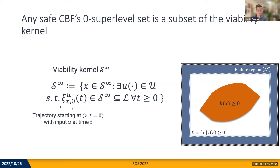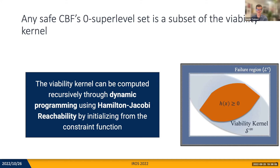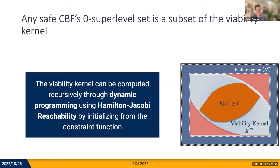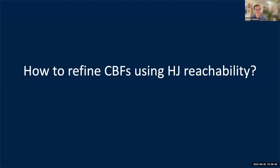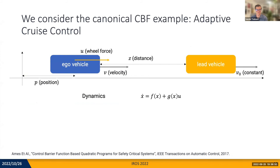Additionally, a safe set by its definition has to be control invariant, which basically implies that you can remain within this set for infinite time. The largest of such sets is called the viability kernel, which is where reachability comes in. The viability kernel can be computed recursively through dynamic programming using HJ reachability by initializing from the constraint function, as you can see here on the right. However, initializing from the constraint function requires waiting until the value function has converged to guarantee safety, and we can typically come up with a much better guess of a certificate function than the constraint function. Additionally, it does not come with the easy deployment of the CBF. So we asked the question: how to refine a CBF using HJ reachability — can you leverage the initial CBF and the principled dynamic programming approach?